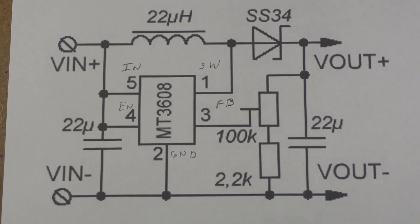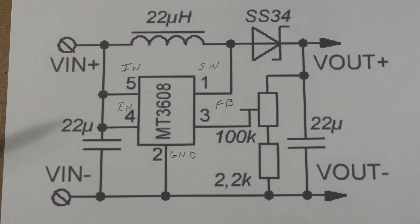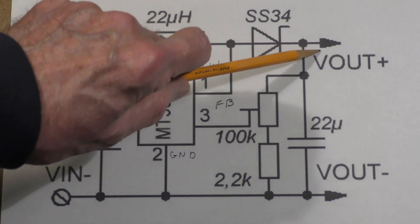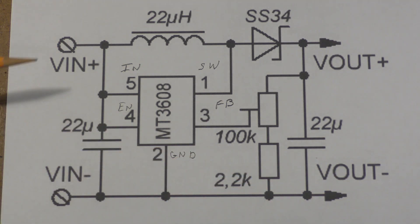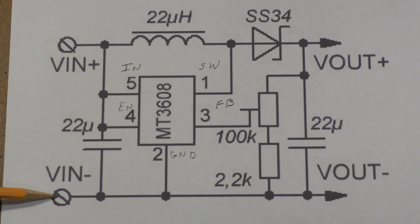Here is the schematic of the boost converter that we were looking at earlier. This is the voltage in, which you may recall was 5 volts. This is the voltage out, which you may recall was 12 volts.